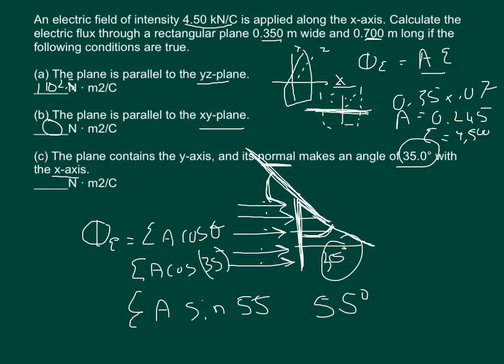Both of those will give you the same answer. And you should get roughly 903.1151 newtons times meters squared per coulomb.